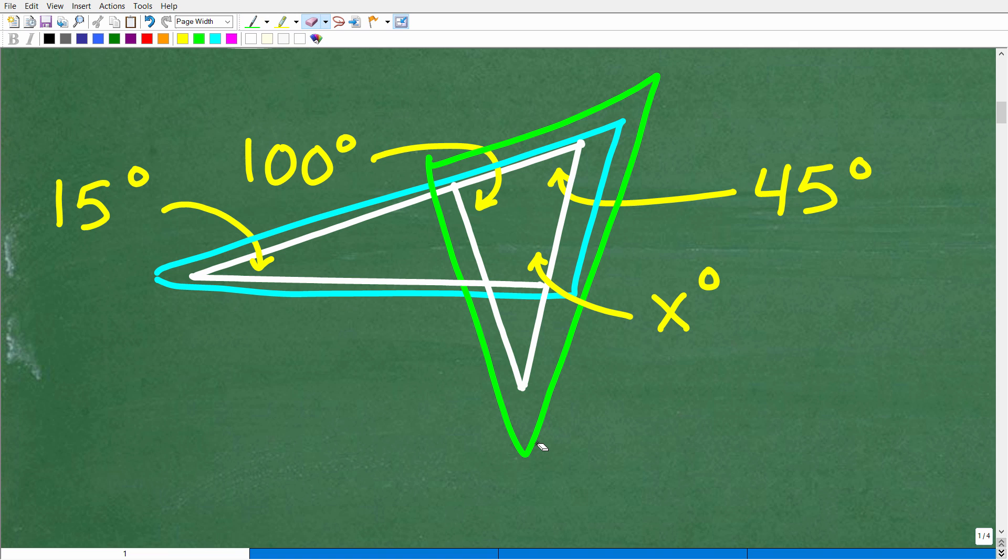Now this angle X is basically kind of involved in both of these triangles to a certain degree. So most people are kind of trying to determine what should I focus on first? Should I focus on this triangle or should I focus on this triangle? Like what is a good approach or good strategy to figure this out?